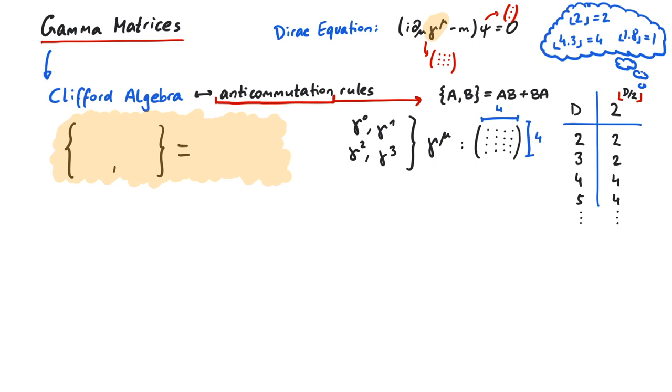So inside our anticommutator we put the gamma matrices. Since we don't want to write many different relations, for instance gamma 1 with gamma 2, gamma 3 with gamma 0 and so on, we choose a placeholder for both. So we write gamma mu and gamma nu. And what's on the right-hand side? In order for his equations to work, Paul Dirac saw that on the right-hand side there has to be 2 times the Minkowski matrix times the unit matrix.